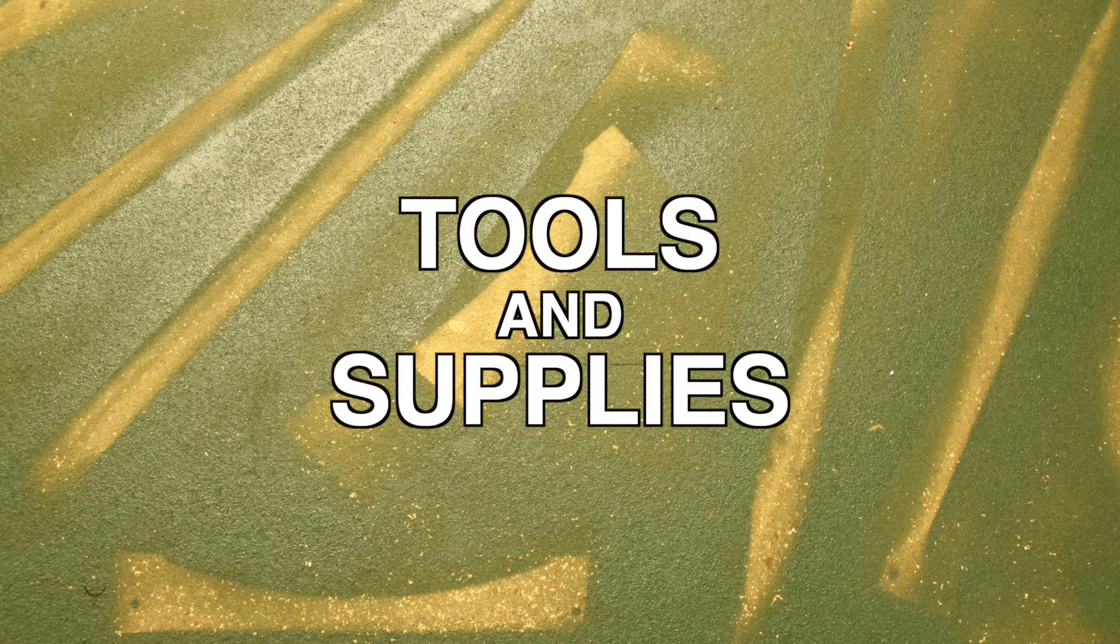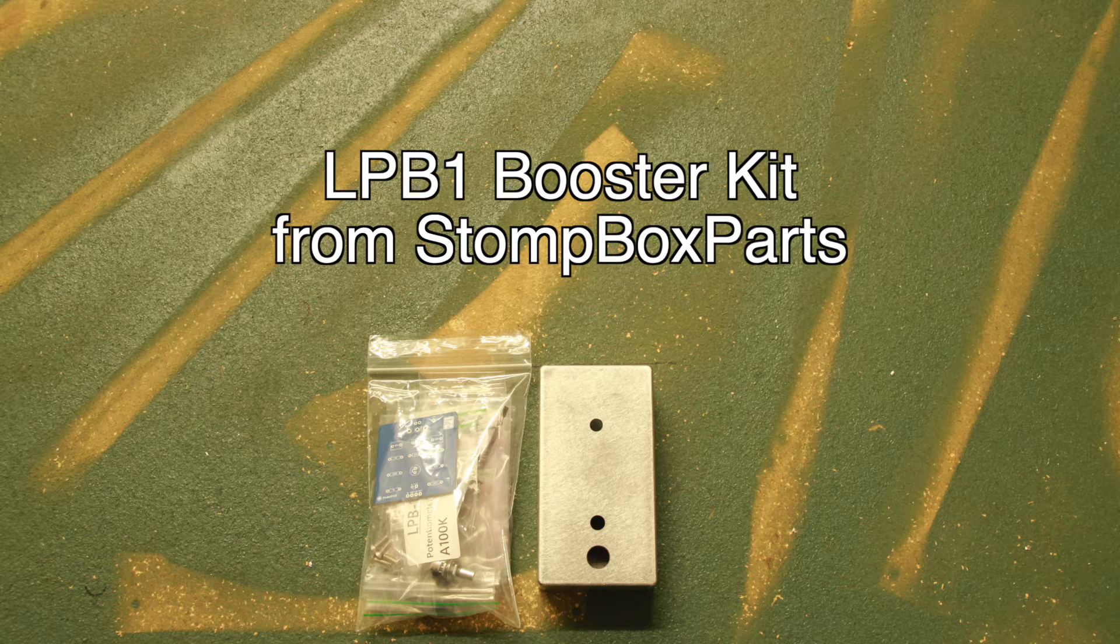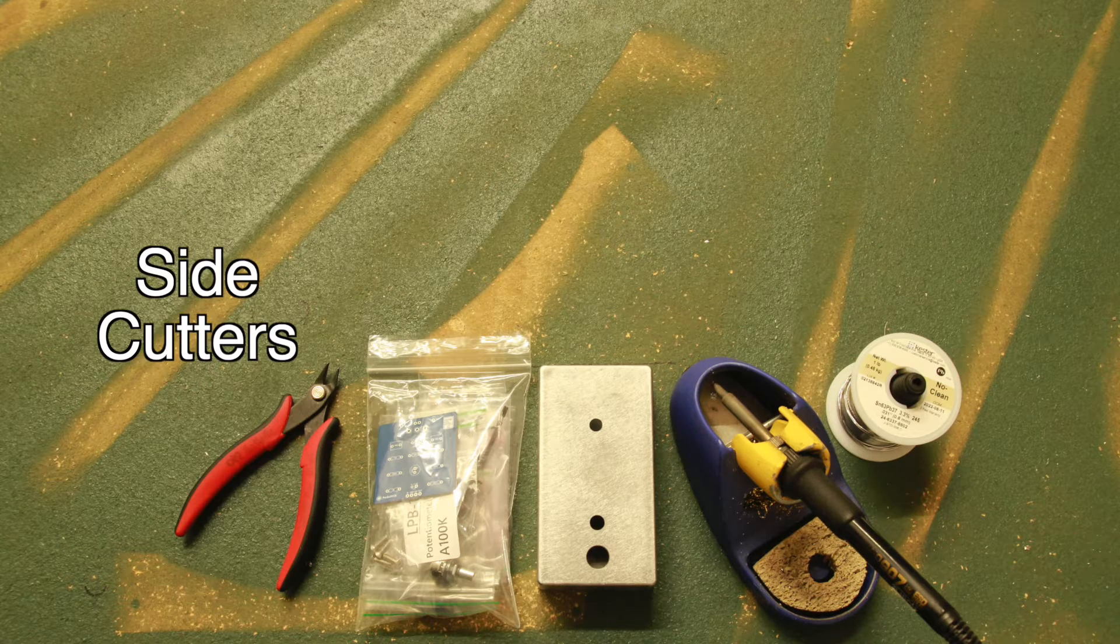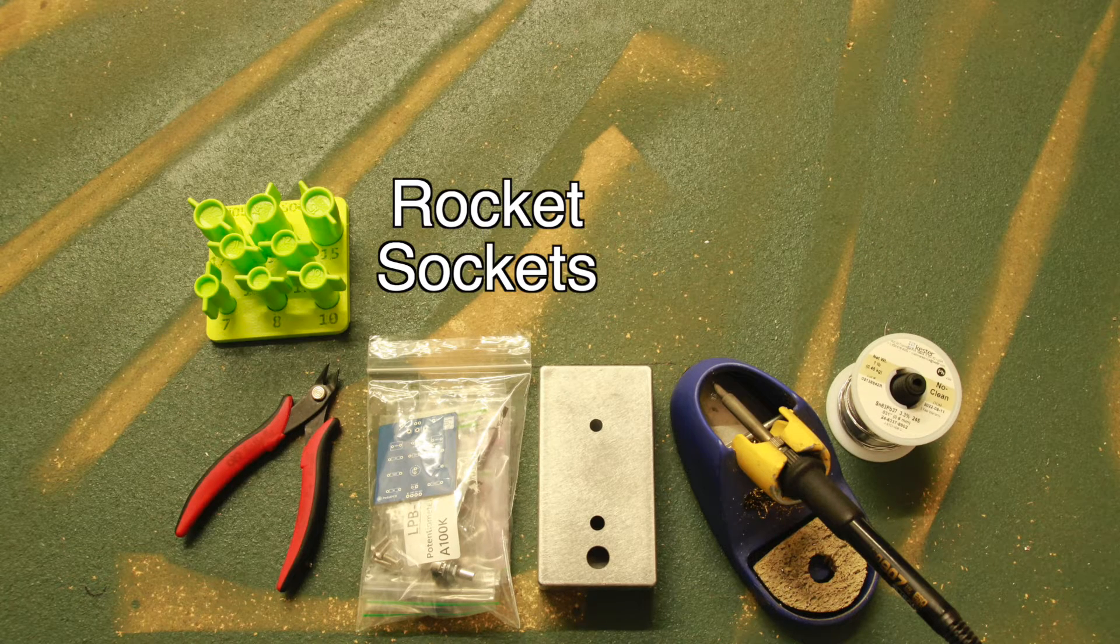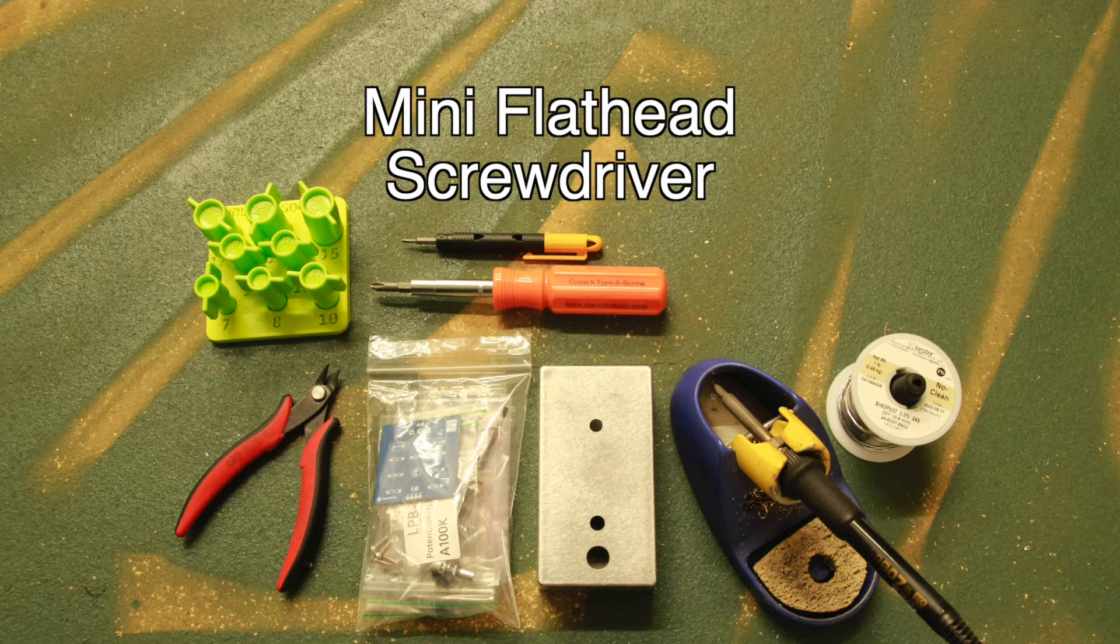Tools and supplies used in this video. An LPB1 style booster kit with pre-drilled enclosure from stompbox parts. A soldering iron. Solder. Side cutters. Rocket sockets or equivalent nut drivers. A phillips head screwdriver. And a mini flat head screwdriver.